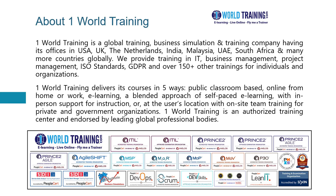We deliver courses in five different ways: one, public classroom-based; two, online which is virtual; three, e-learning; four, a blended approach of e-learning as well as support when you need it from us; and five, at the user's location on-site, for both private and government organizations. One World Training is authorized and endorsed by leading global professional bodies, and we have listed some of those logos and courses that we offer.